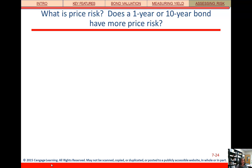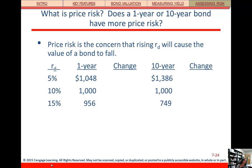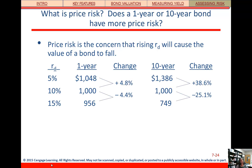The last thing we need to talk about is assessing risk in bonds. First, let's talk about price risk. Let's compare a short-term one-year bond and a long-term 10-year bond to figure out which one has more risk. If we look at different yields for the two bonds and how the price changes, that will give us an indication of price risk. Price risk is the concern that a rising yield will cause the value of the bond to fall — interest rates go up, bond prices go down.